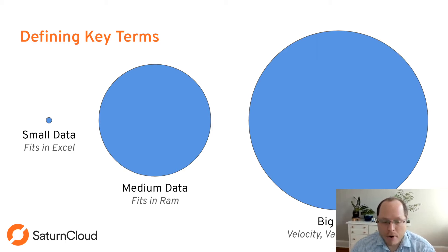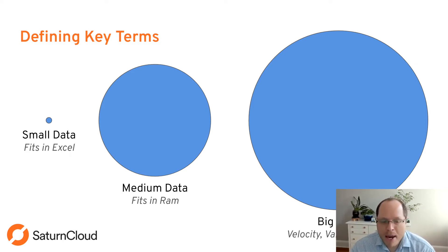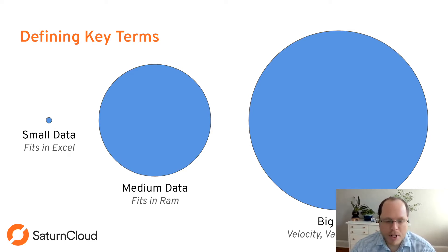Medium data is a nice happy place for doing coding — that's when everything fits into RAM. So if you're used to using pandas, that's where a lot of your analyses will go. Then we move on to big data, which is the focus of this talk. That can be a variety of things. The first challenge you'll face is large volumes — anything larger than will fit into RAM.